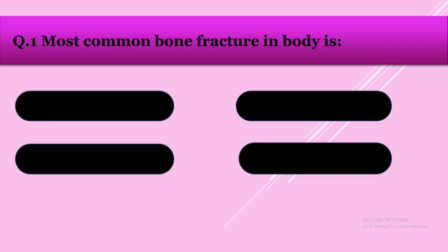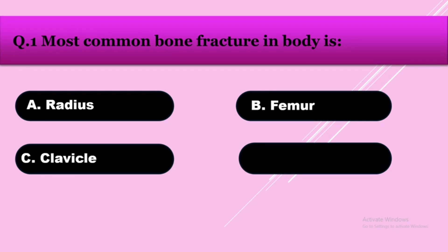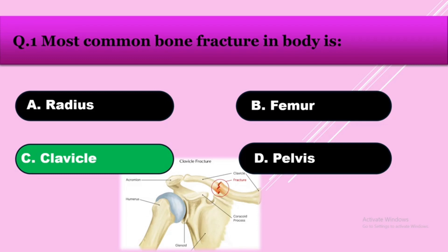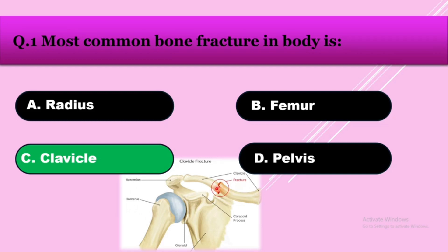Question number one: The most common bone fracture in the body is — option A: radius, option B: femur, option C: clavicle, option D: pelvis. The answer is clavicle. The most common site of clavicle fracture is the middle one-third; 80% of clavicle fractures occur at the middle one-third.